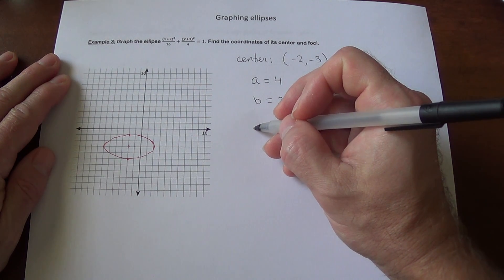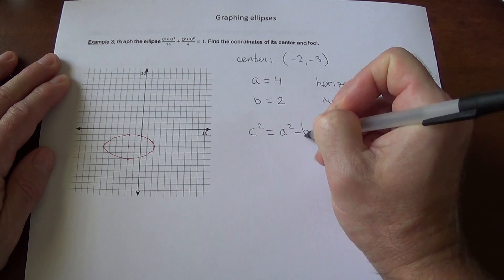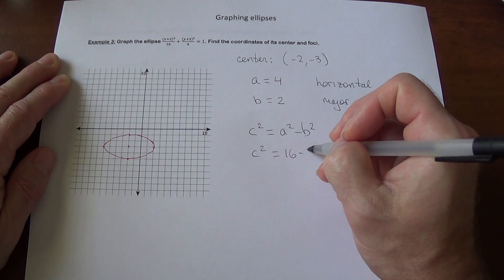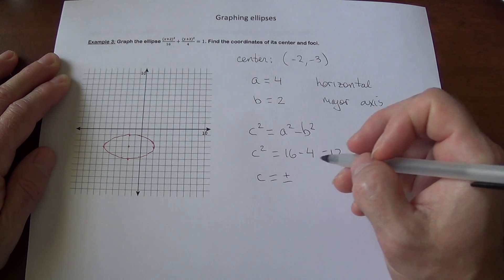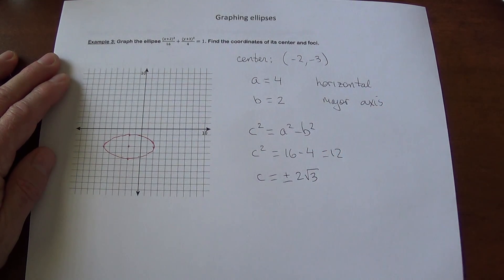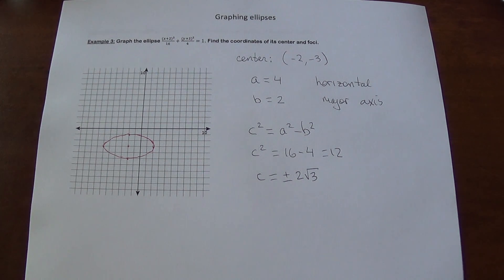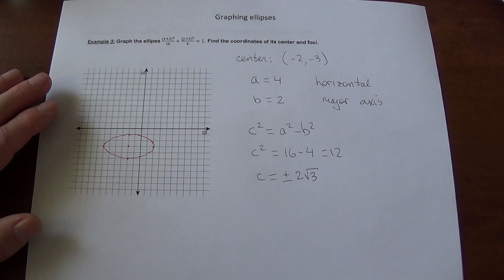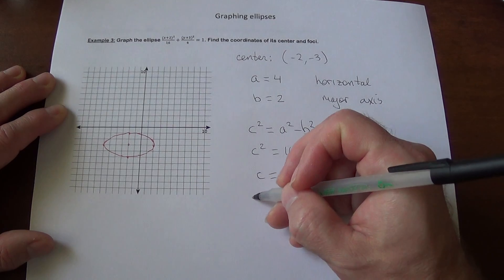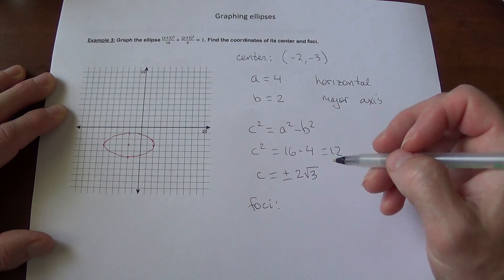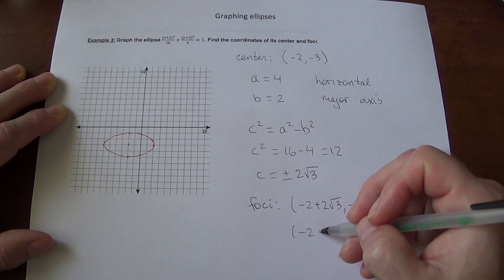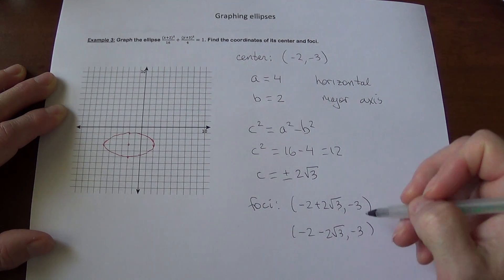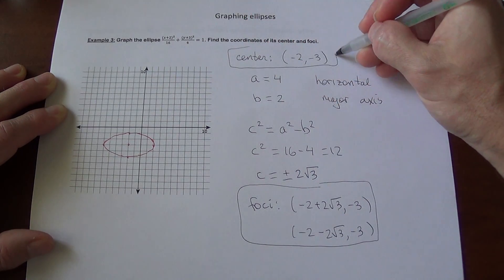We still need to find the value of c. c squared equals a squared minus b squared: c squared equals 16 minus 4, which is 12, so c equals 2 square root of 3. Plus or minus simply indicates we go both left and right by adding and subtracting the value from the x-coordinate. So our foci are at (−2 + 2√3, −3) and (−2 − 2√3, −3). There are the foci, here is the center, and the graph.